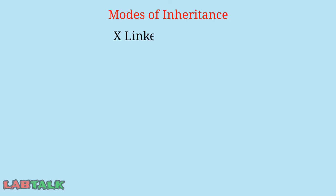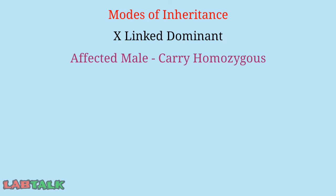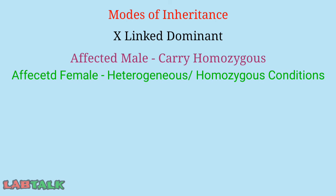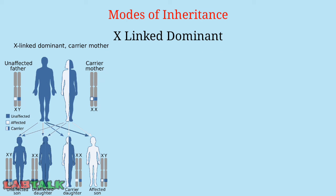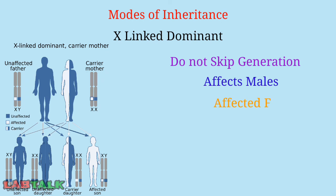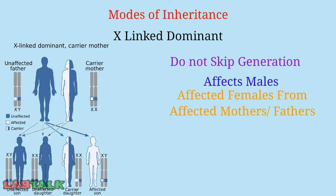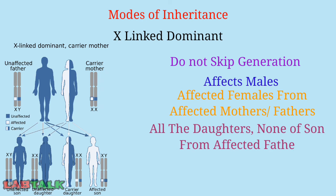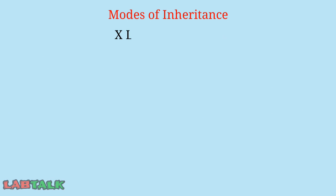In X-linked dominant inheritance, males have X and Y chromosomes while females have two X chromosomes. An affected male carries the defective allele in hemizygous condition, and an affected female carries the defective allele in either heterozygous or homozygous condition. Key features: the trait does not skip any generation; it always affects males from affected females; affected females always come from affected mothers or fathers; 50% of children of an affected heterozygous mother are affected; and all daughters — but none of the sons — of affected fathers are affected.